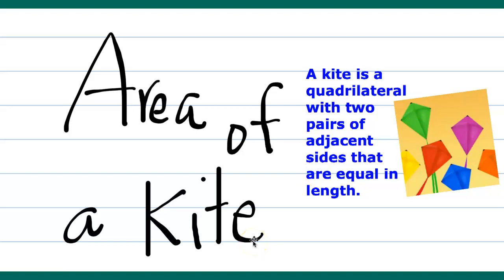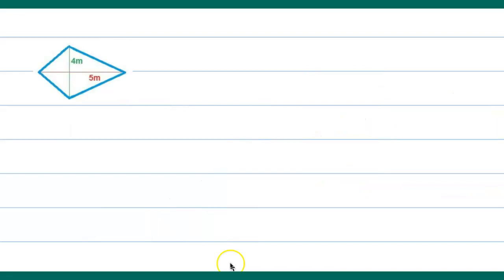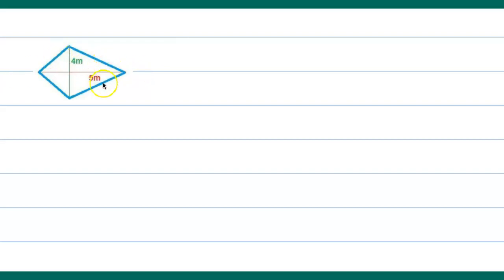Let's have an example on how we could solve the area of a kite. Looking over here, this is a kite. You can see that the green line is four — from one end to the other end is four — and from one end to the other end is also five meters. You can see that these are two identical triangles that fit all together.